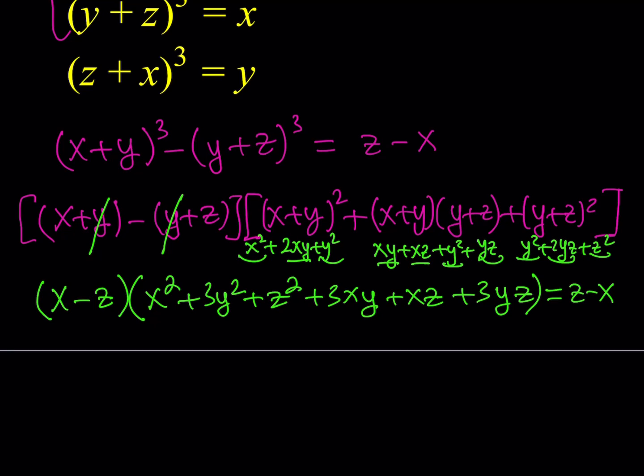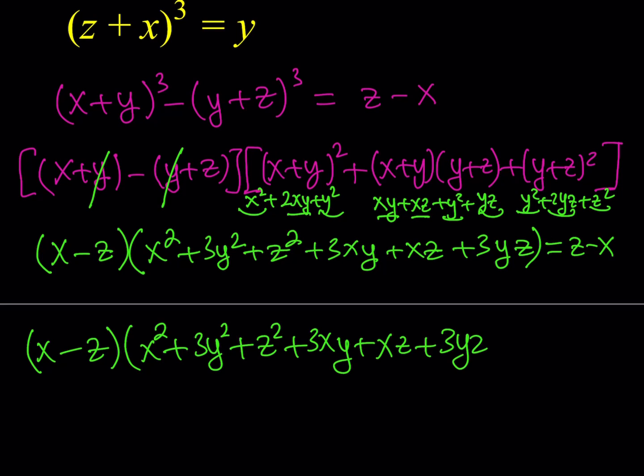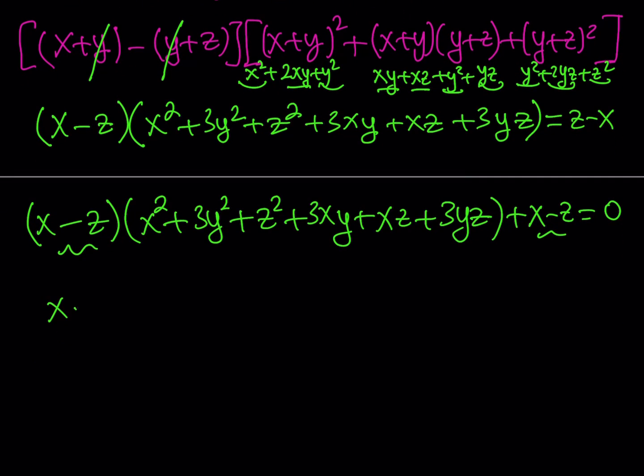Now, one of the things I can do is I can just go ahead and add the opposite of z - x to both sides, which is x - z, right? So if you add x - z to both sides, then you should be getting something like this. (x - z) multiply by x² + 3y² + z² + 3xy + xz + 3yz. Now, when you add the x - z to both sides, you're going to get something like this. And I could probably show that first and then set it equal to 0. Now, x - z is a common factor. We can just go ahead and factor it out. And when we do, we should be getting one of the solutions. Okay, cool. Let's see what we get from the other factor. x² + 3y² + z² + 3xy + xz + 3yz + 1. And the whole thing is equal to 0.